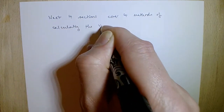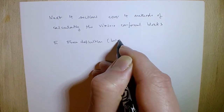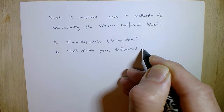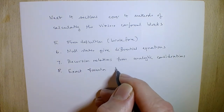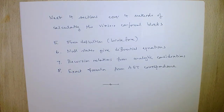The next four sections cover four methods of calculating Virasoro conformal blocks. Section 5 is the brute force definition; section 6 uses null states to give differential equations; section 7 uses recursion relations from analytic considerations; section 8 is an exact formula from the AGT correspondence. Section 7 also gives exact formulae summing over partitions. Those are four methods — there are others not covered here.